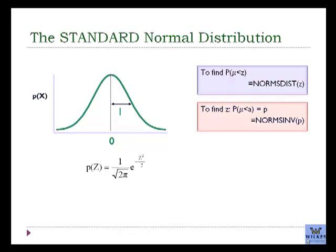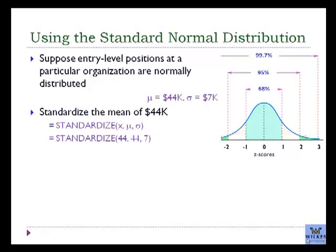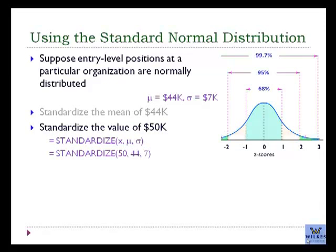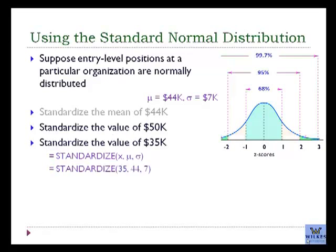There are formulas, Excel formulas, and probability tables to calculate probabilities from the standard normal distribution. Let's return to the entry-level positions. The mean is 44,000 and the standard deviation is 7,000. If we standardize 44,000, we get a Z-score of 0, which we should expect. If we standardize 50,000, which is slightly above the mean, we get a Z-score of 0.86. If we standardize 35,000, which is slightly below the mean, we get a Z-score of negative 1.3, which tells us it's 1.3 standard deviations below the mean.